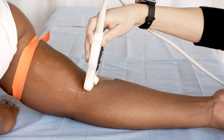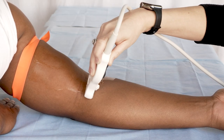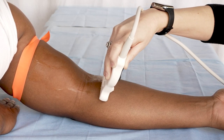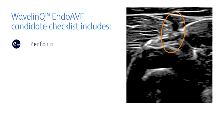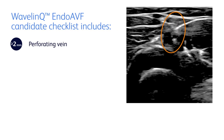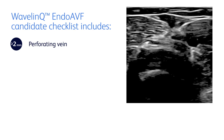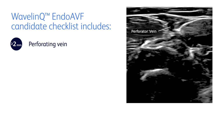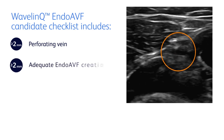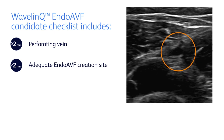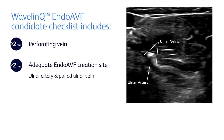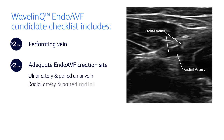The Wavelink Endo-AVF System procedure has three additional screening requirements. First, a perforating vein at least 2 millimeters in diameter must be present, as this is how the superficial and deep veins communicate. Second, an adequate Endo-AVF creation site is needed with either the ulnar artery and a paired ulnar vein or the radial artery and a paired radial vein measuring at least 2 millimeters in diameter.